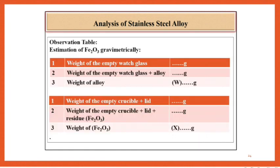Observation table for the estimation of Fe(OH)3 gravimetrically includes: weight of empty watch glass, weight of empty watch glass plus alloy, then weight of alloy is 0.3 gram. Next section: weight of empty crucible plus lid, weight of empty crucible plus lid plus residue, and finally weight of residue.